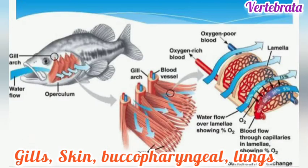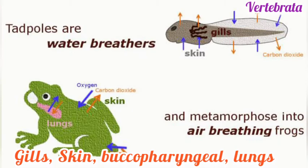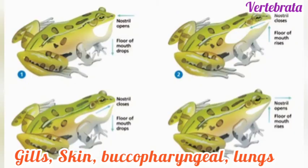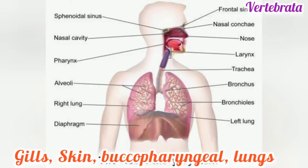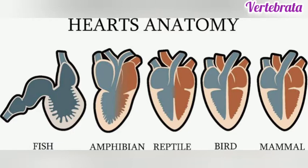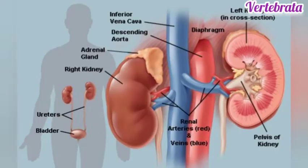Vertebrates also have aerobic respiration. Respiration occurs through gills, skin, buccopharyngeal cavity, or lungs. The vertebrates contain a ventral muscular heart — they may have a two-chamber, three-chamber, or four-chamber heart, located in the ventral side.